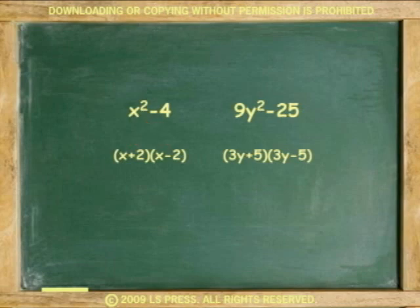The factors of the second example, 9y squared minus 25, are 3y plus 5 times 3y minus 5, because the square root of 9 is 3, the square root of y squared is y, and the square root of 25 is 5.